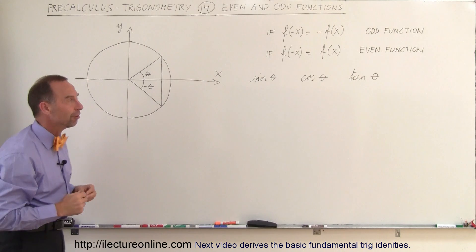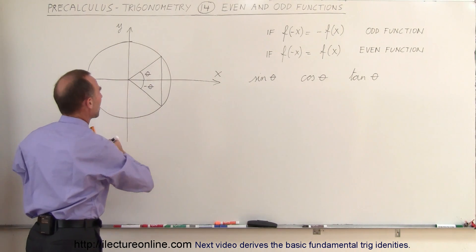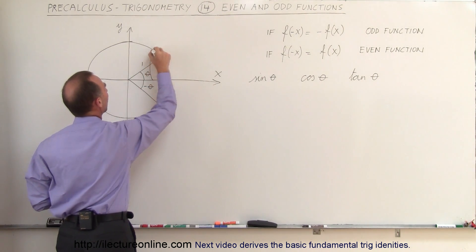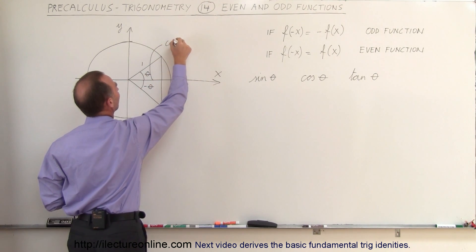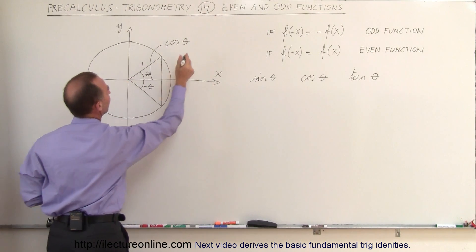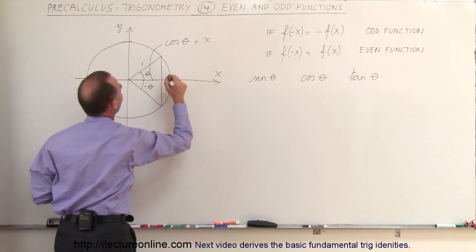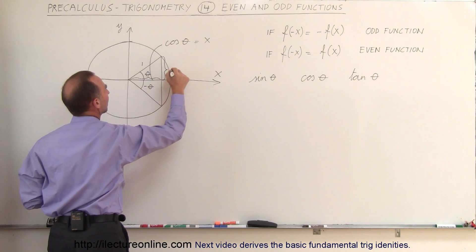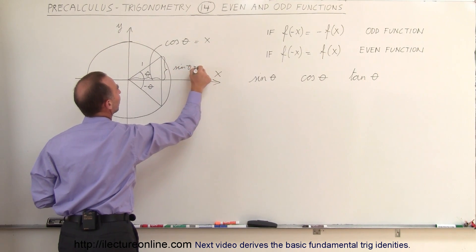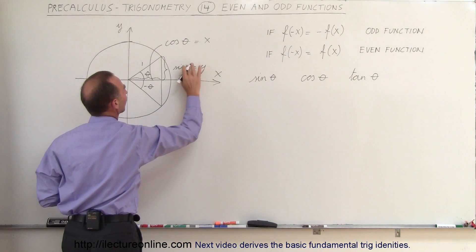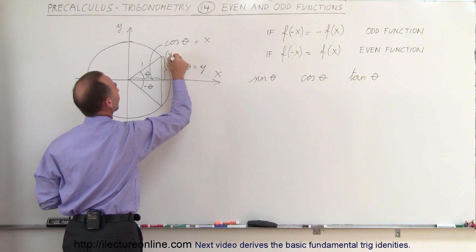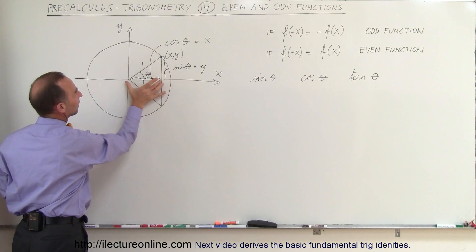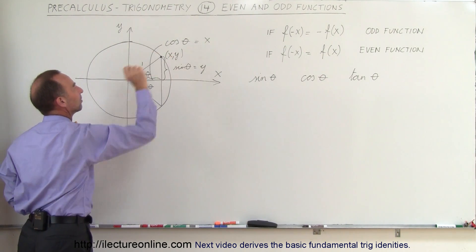So where does sine, cosine, and tangent fall? Well, if we take a look at the unit circle, remember the hypotenuse is equal to 1. The adjacent side right here is the cosine of theta, so the x value right here is equal to x. And this distance right here would be equal to the sine of theta, which is equal to the y value — corresponding to the x and y value of that point, where the x value is this distance and the y value is this distance.